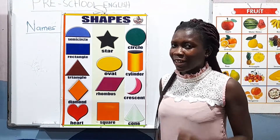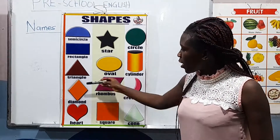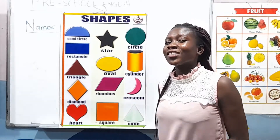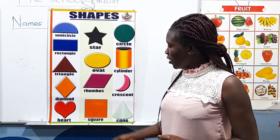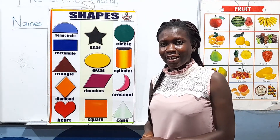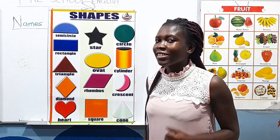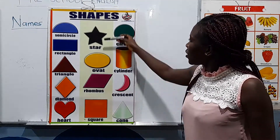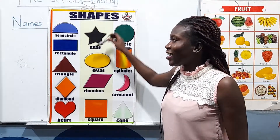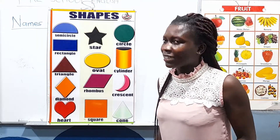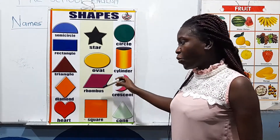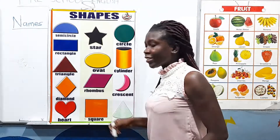When we come to the diamond, it has an orange color. The hat has a red color. The star here has a black color. The oval has a yellow color, and the rhombus has a mauve color.